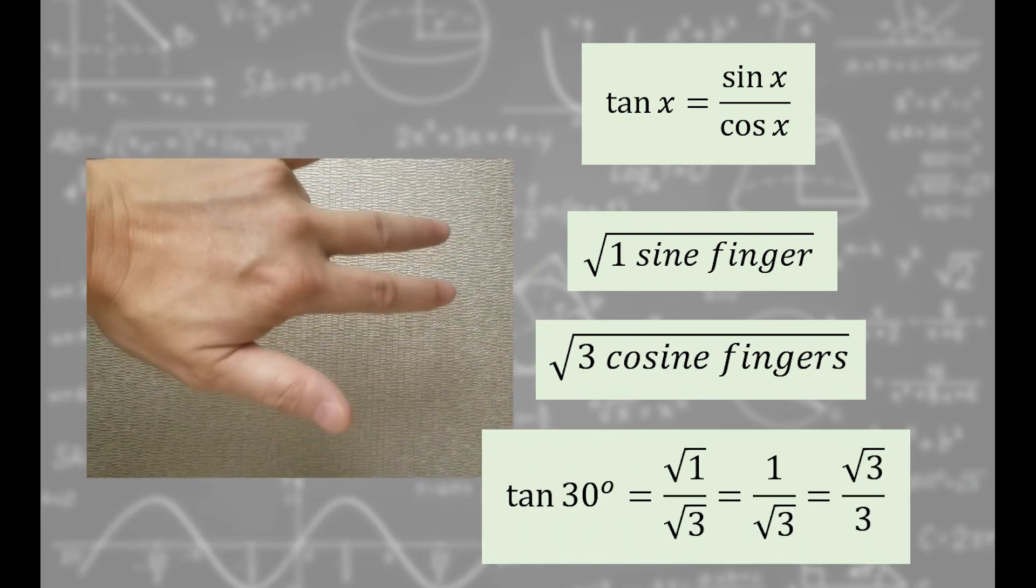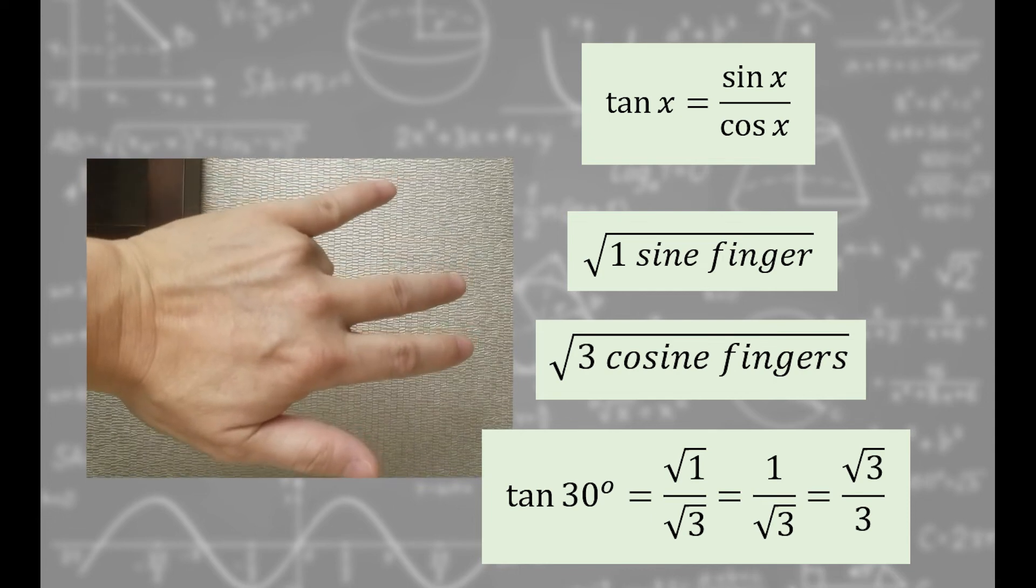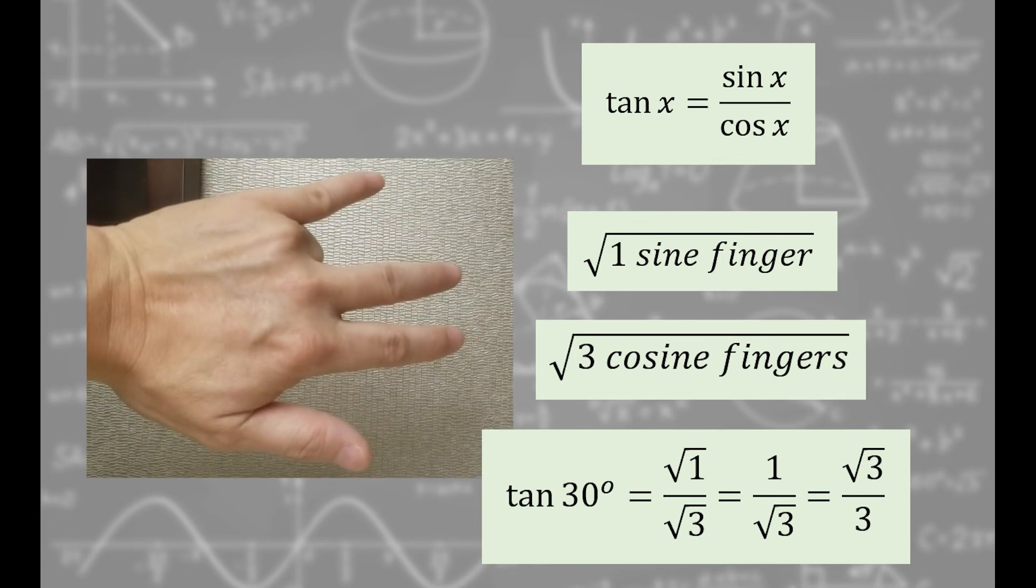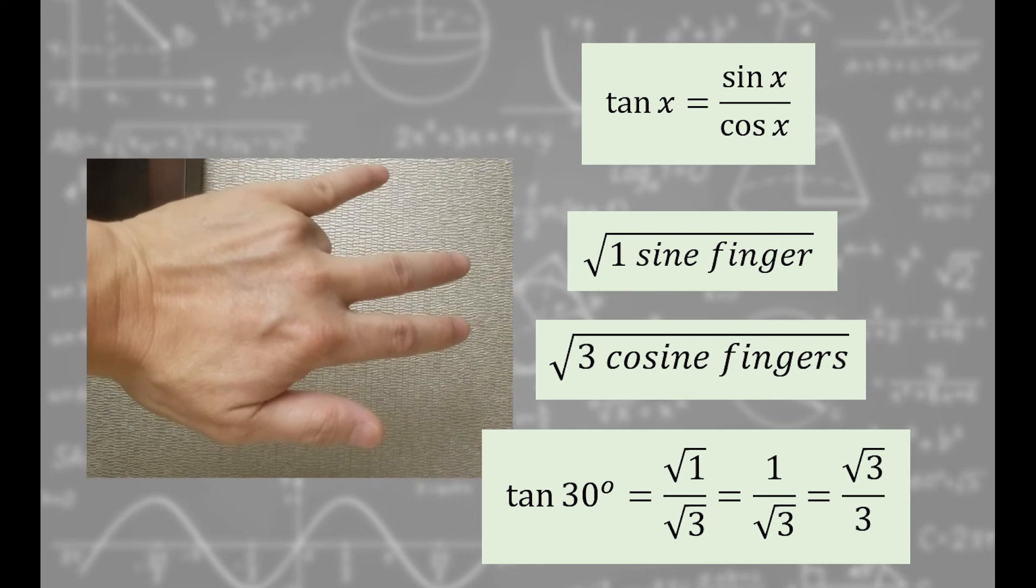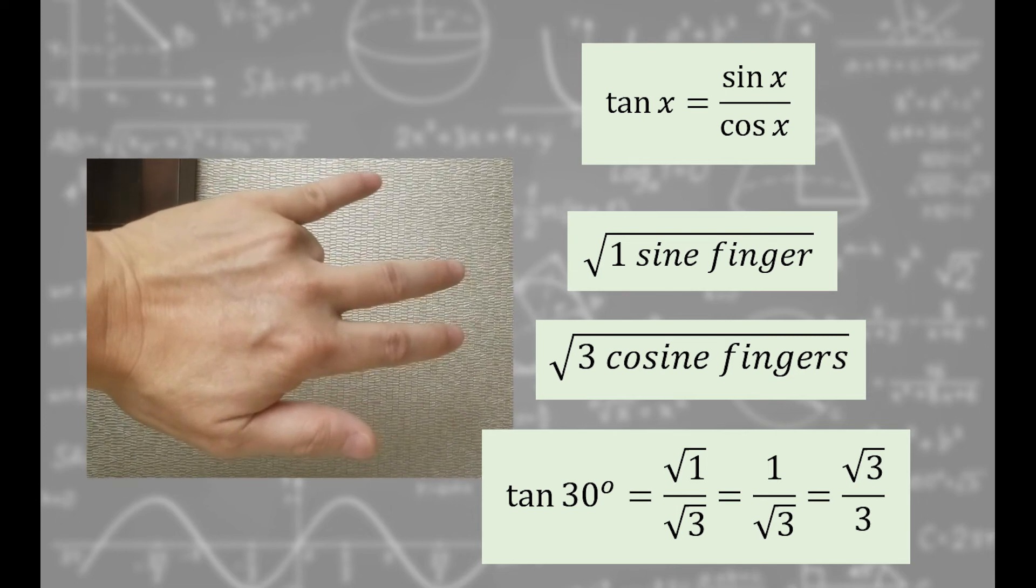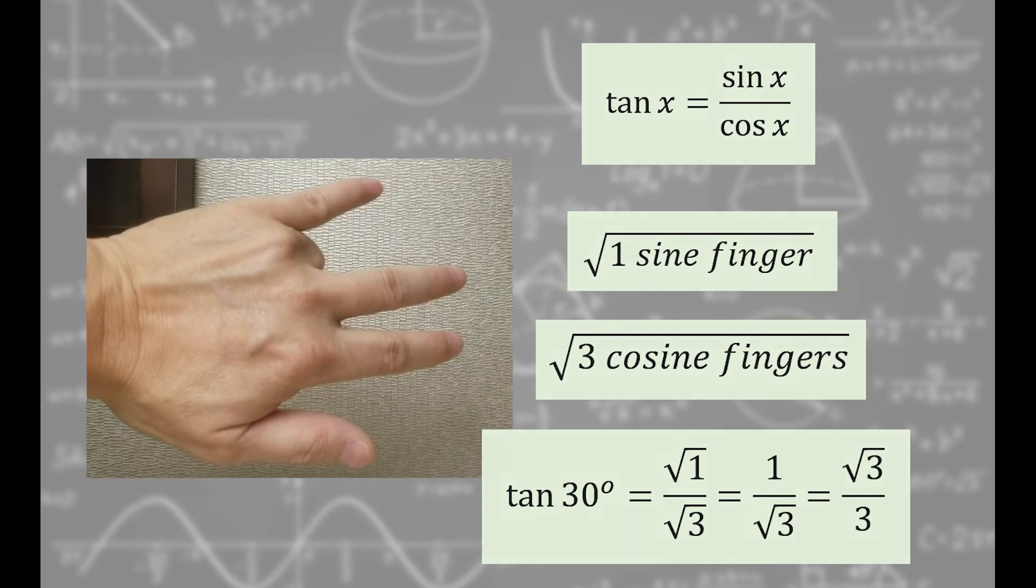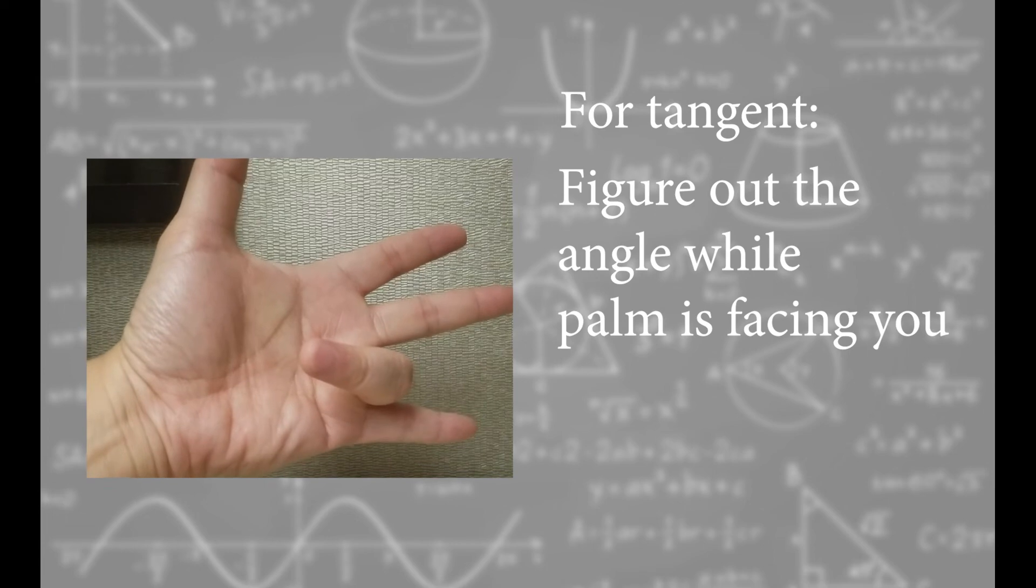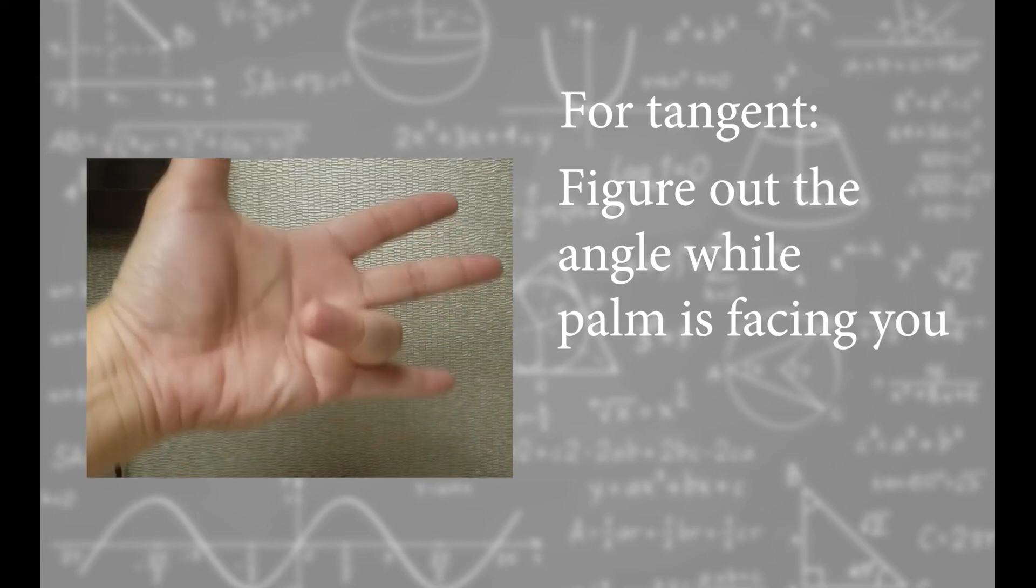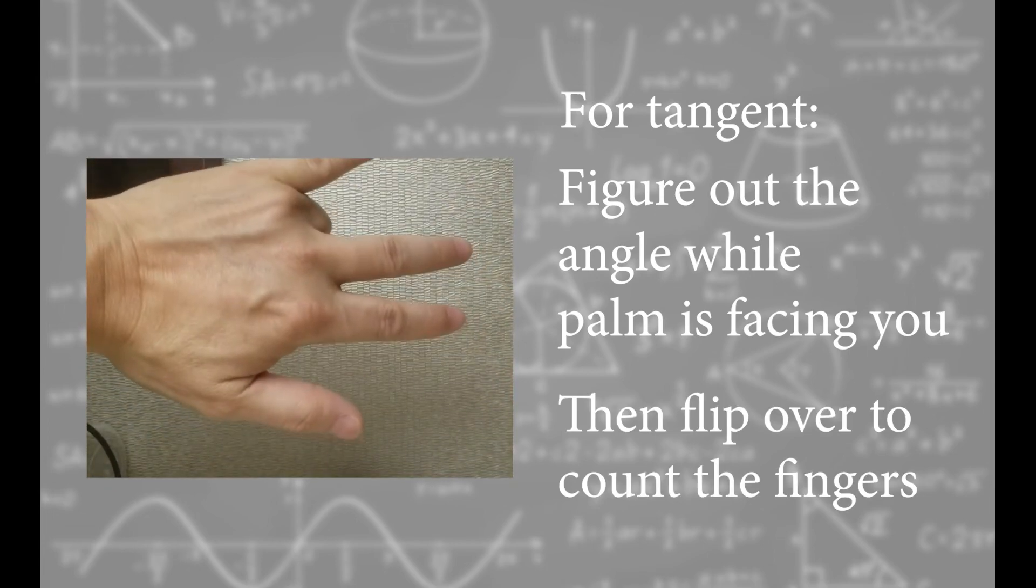Tangent of 30 degrees equals square root of 1 over square root of 3, which equals 1 over square root of 3. If necessary, then you rationalize the fraction and you get root 3 over 3. So tangent is a little tricky in that you have to figure out the angle while the palm is facing you. And then you flip it over to compute the tangent.